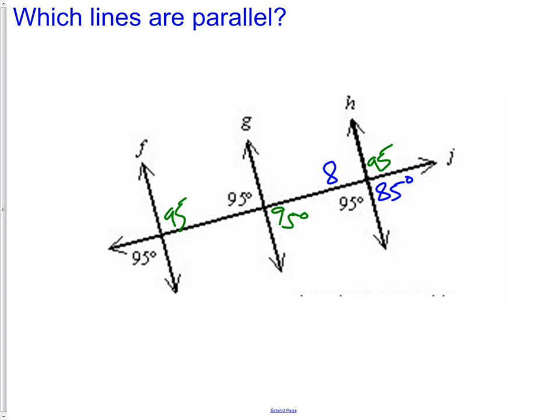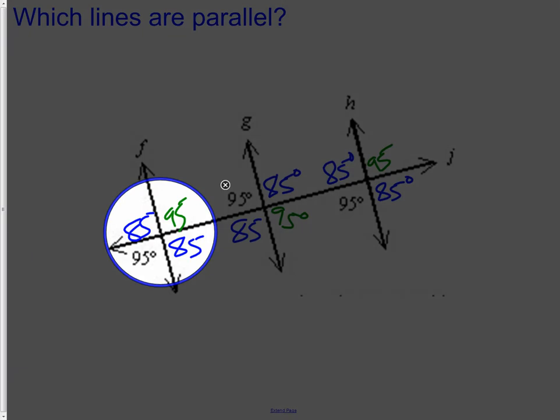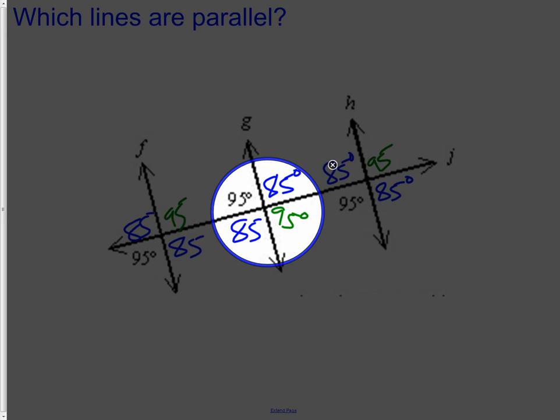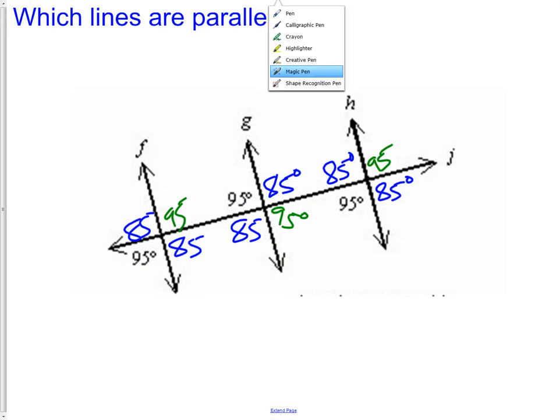Now we can continue using that same strategy throughout the rest of the problem. 85 here, 85 here, 85 here, and 85 here. As we look at it, your first instinct would be to say that F, G, and H are all parallel. But we need to look a little closer. In this group of angles, notice I have 85 in the top left, 95 in the top right. If I go to my next group of angles, I have 95 in the top left and 85 in the top right. If I connect these up, I have 95 and 85 as corresponding angles. I have corresponding angles not congruent.